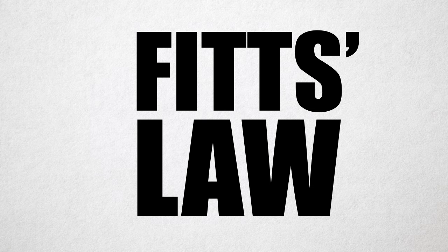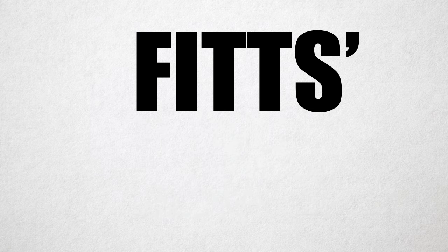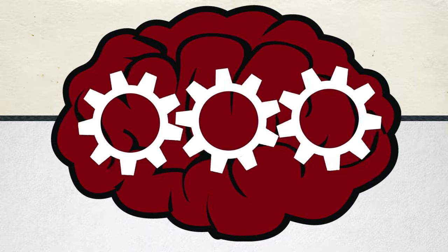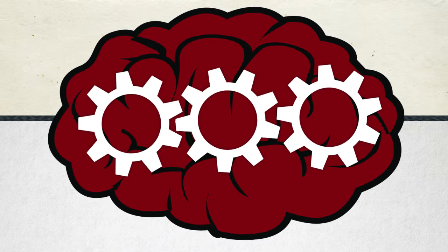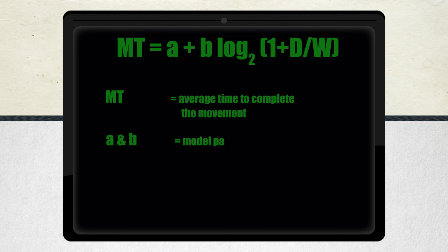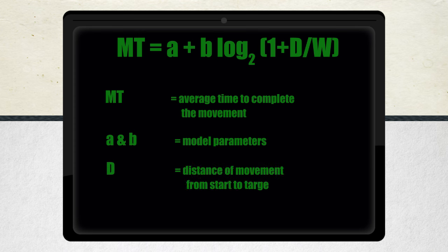To be honest, Fitts' Law isn't really a law at all. It's actually a descriptive model of human psychomotor behavior that's written as an equation, like this one. In the formula, MT is the average time to complete the movement. A and B are model parameters.